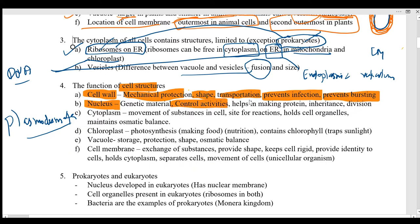The nucleus contains the genetic material and basically controls all the activities of the cell. It helps in the making of proteins required to give a specific function to the cell, such as enzymes and hormones. The nucleus also helps in inheritance, cell division, and indirectly in reproduction.